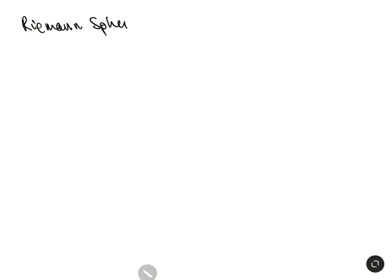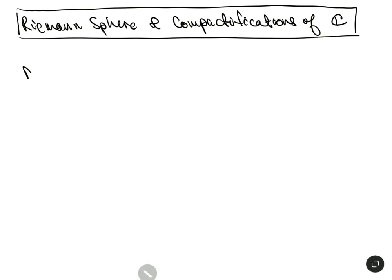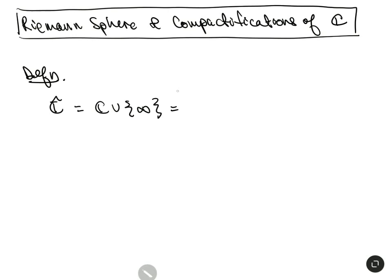I want to talk about the Riemann sphere and compactifications of ℂ. I'm saying compactifications but they're all really equivalent. Let's start with the basic one. Definition: we let ℂ-hat be ℂ union a single new point — ℂ union {∞}. This is what's called the one-point compactification of ℂ.